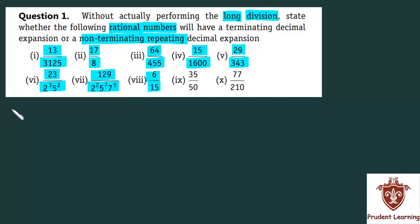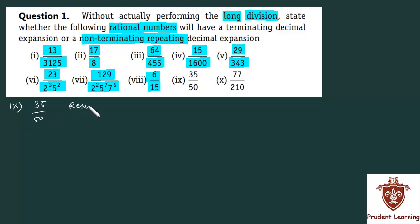Let us now move on to the ninth section of the question. The given rational number is 35 upon 50. Now let us recall one result.